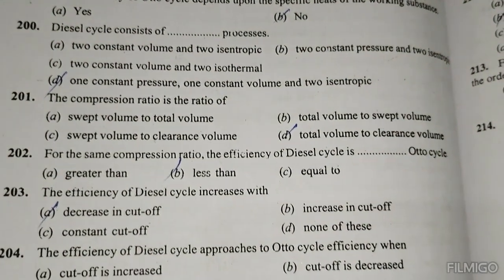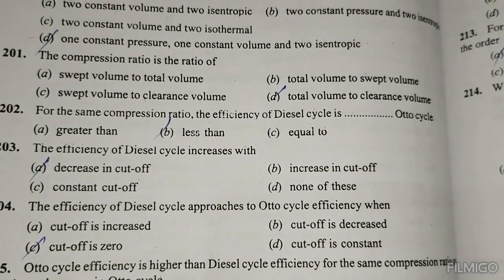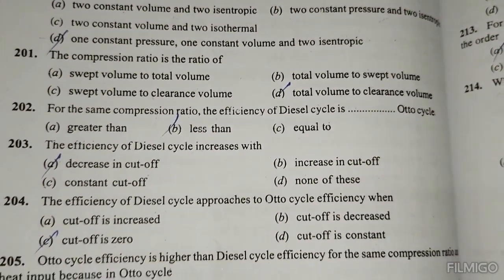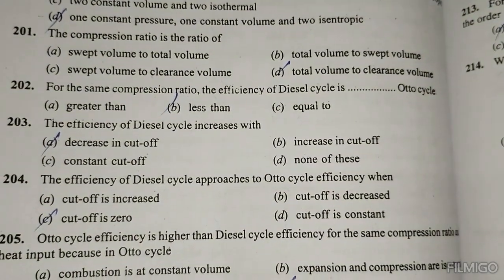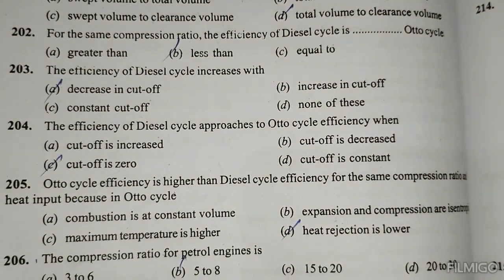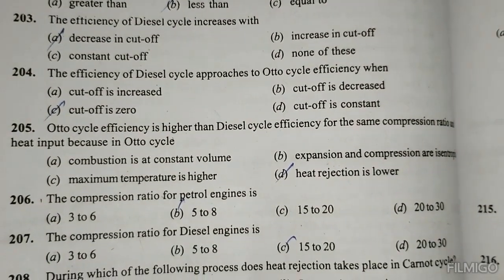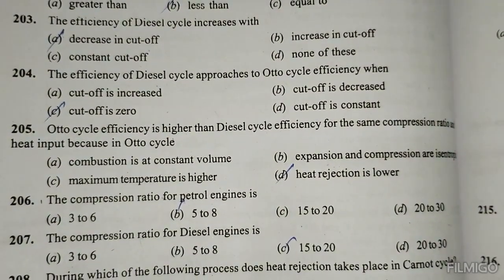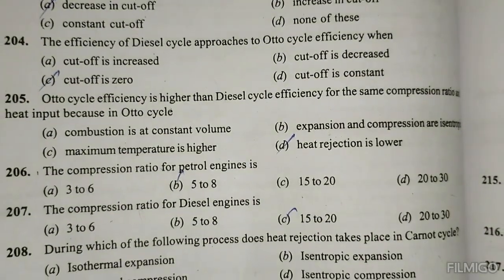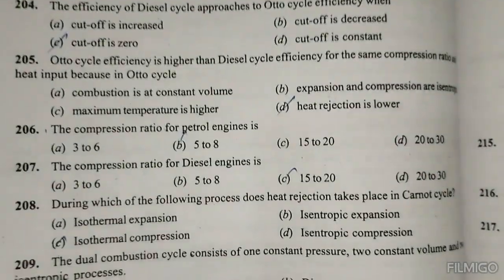The compression ratio is the ratio of total volume to clearance volume. For the same compression ratio, the efficiency of the Diesel cycle is less than the Otto cycle. The efficiency of the Diesel cycle increases with decrease in cut-off ratio. The efficiency of the Diesel cycle approaches Otto cycle efficiency when cut-off is zero. Otto cycle efficiency is higher than Diesel cycle efficiency for the same compression ratio. Heat input in the Otto cycle is lower than heat rejection.